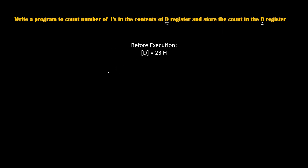So 23H can be written as 0010 (which is 2) and 0011 (which is 3). How many ones are there in the D register? The total number of ones are 3. That's why the count stored in the B register should become 3, since 3 ones are present. That's why B should become 3.